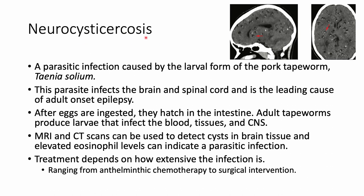The last example of a parasitic infection is neurocysticercosis, caused by the larval form of the pork tapeworm Taenia solium, which can be found in undercooked pork. This parasite infects brain and spinal cord tissue and can lead to adult-onset epilepsy due to damage to nervous tissue. Eggs are ingested, hatch in the intestine, and adult tapeworms produce larvae that move through the blood into tissues and eventually reach the central nervous system.